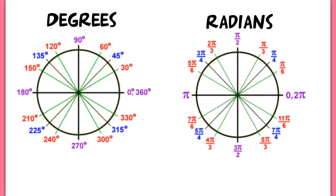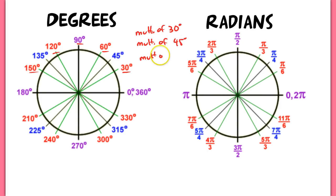If we take a look at our unit circle and the special angles, you'll notice that you have multiples of 30 degrees, multiples of 45 degrees, and multiples of 60 degrees — with some repeats since some multiples of 30 are also multiples of 45. These are your basic angles. I hope these numbers ring a bell — we're going to derive 30-60-90 triangles and 45-45-90 triangles to help us understand why the unit circle looks the way it does.